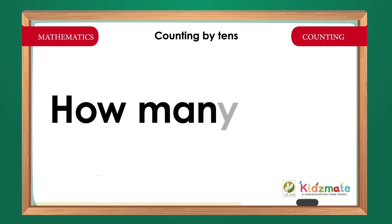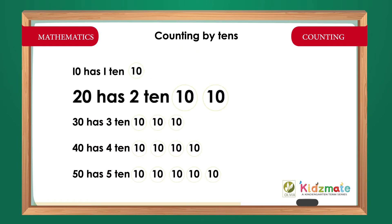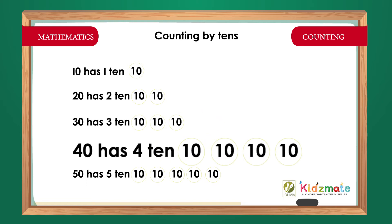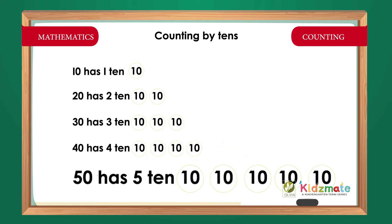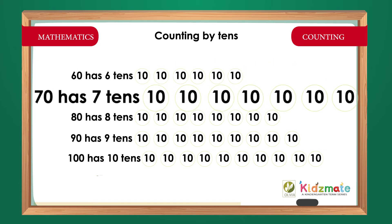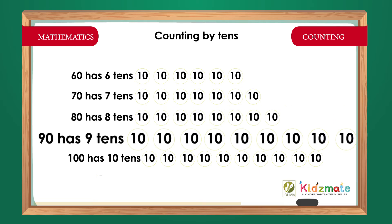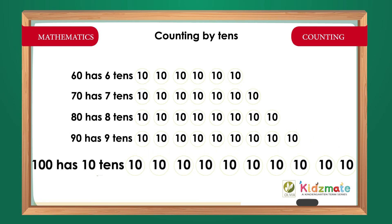How many Tens? 10 has one Ten. 20 has two Tens. 30 has three Tens. 40 has four Tens. 50 has five Tens. 60 has six Tens. 70 has seven Tens. 80 has eight Tens. 90 has nine Tens. 100 has ten Tens.